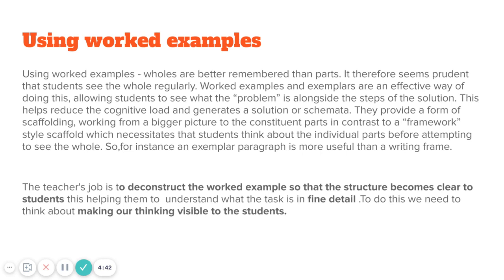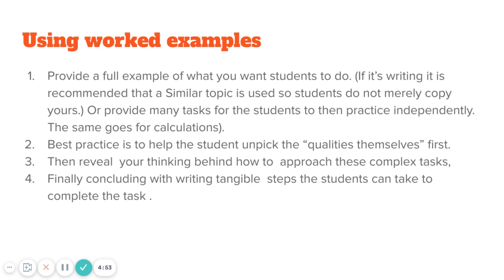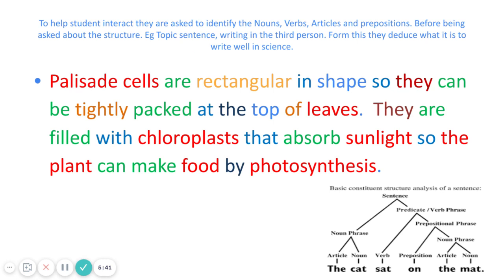An ideal way of doing this is making our own thinking visible to our students — why we chose a particular word or a particular strategy is an important part of this teaching. The steps to using worked examples: provide a full example of what you want students to do. For writing, choose a similar topic rather than the one you want students to write about, to avoid them simply copying. You should also provide many tasks for students to practice independently, and for calculations this is particularly important. The best practice is to help students unpick the qualities themselves first before revealing your own thinking, then provide something tangible — steps or a process — that students can work from.